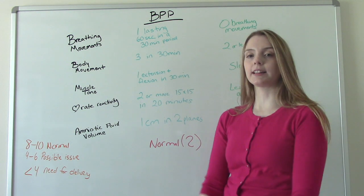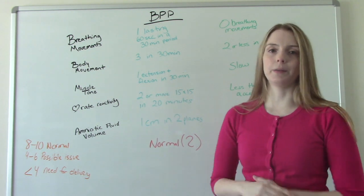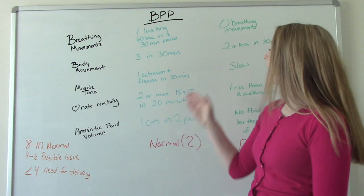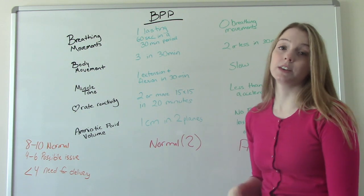And then coming back, at least one in that 30 minute time frame. If they're unable to do that or they're doing it very slowly then they'll get a zero.